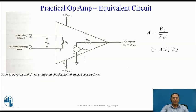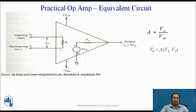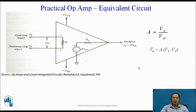We can understand this large signal voltage gain using the equivalent circuit of a practical op-amp. The input at the non-inverting terminal is V1, and at the inverting terminal is V2. The differential voltage between them is called VID, and the input resistance is RI. The op-amp amplifies the differential input voltage with a large signal gain of A. So, V0 = A × (V1 − V2), or V0 = A × VID, where VID is the differential input voltage.